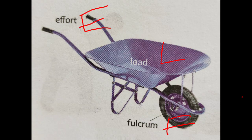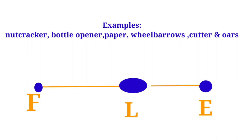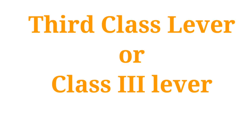In a second class lever, the fulcrum is at one end, the load is in the middle, and the effort is at the other end. In this type of lever, the load lies between the effort and the fulcrum. Examples of second class levers are nutcrackers, bottle openers, and paper cutters.